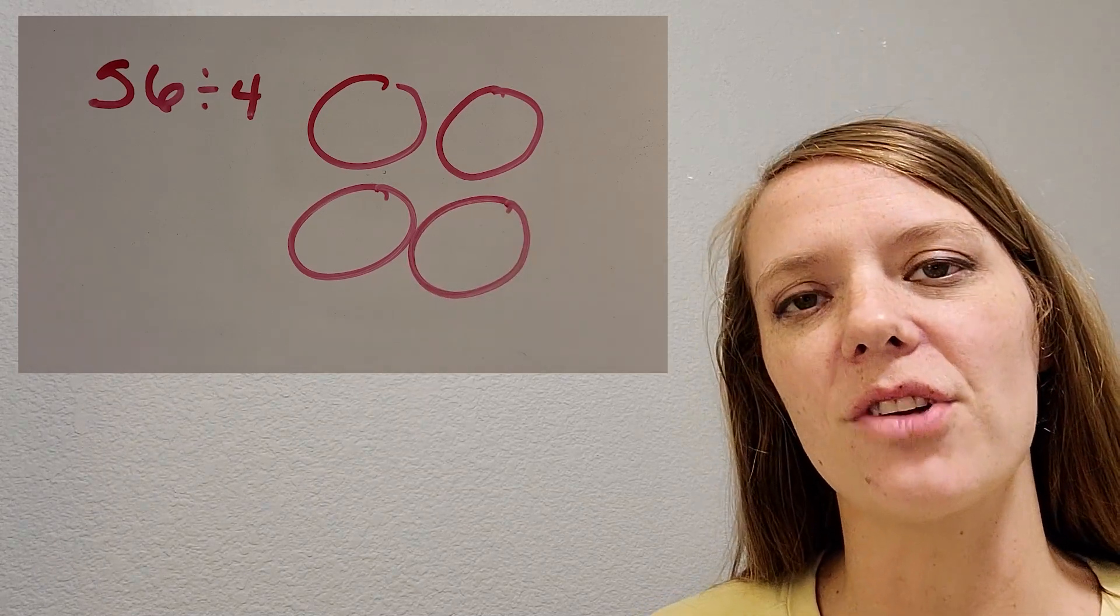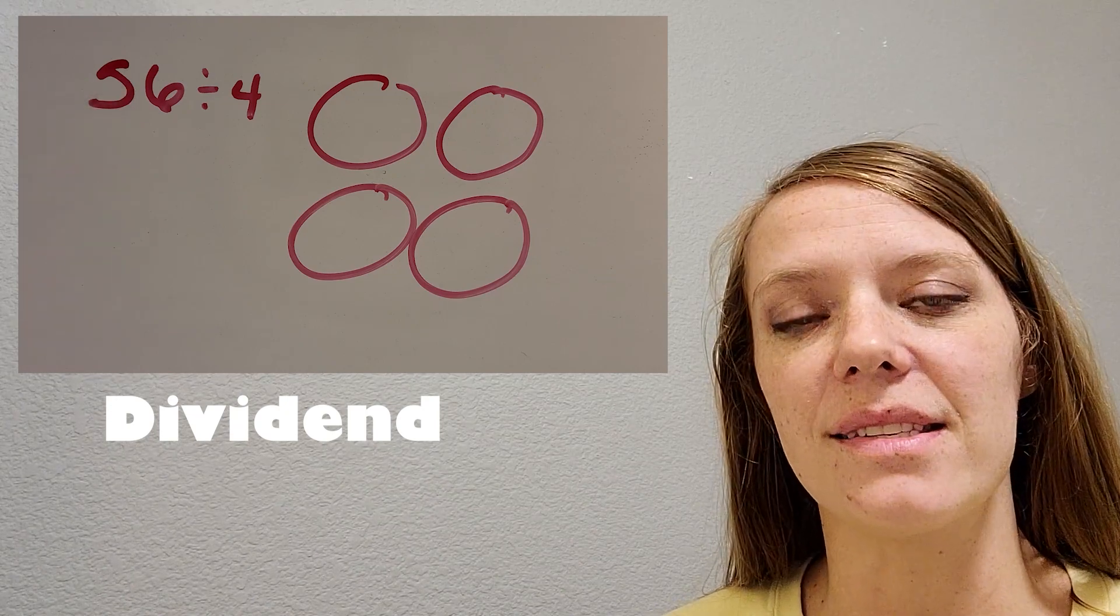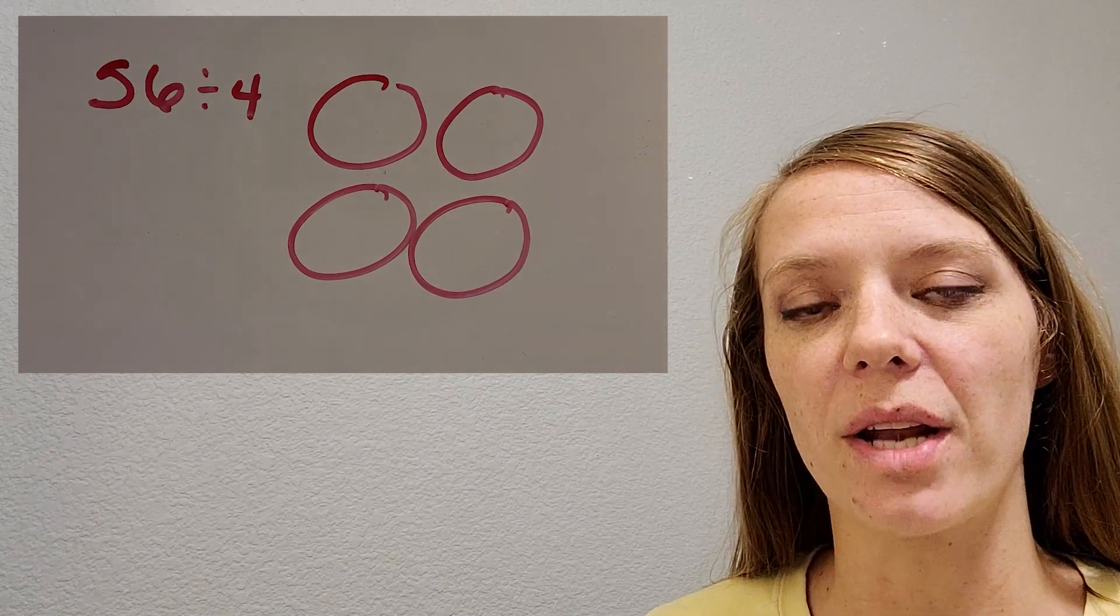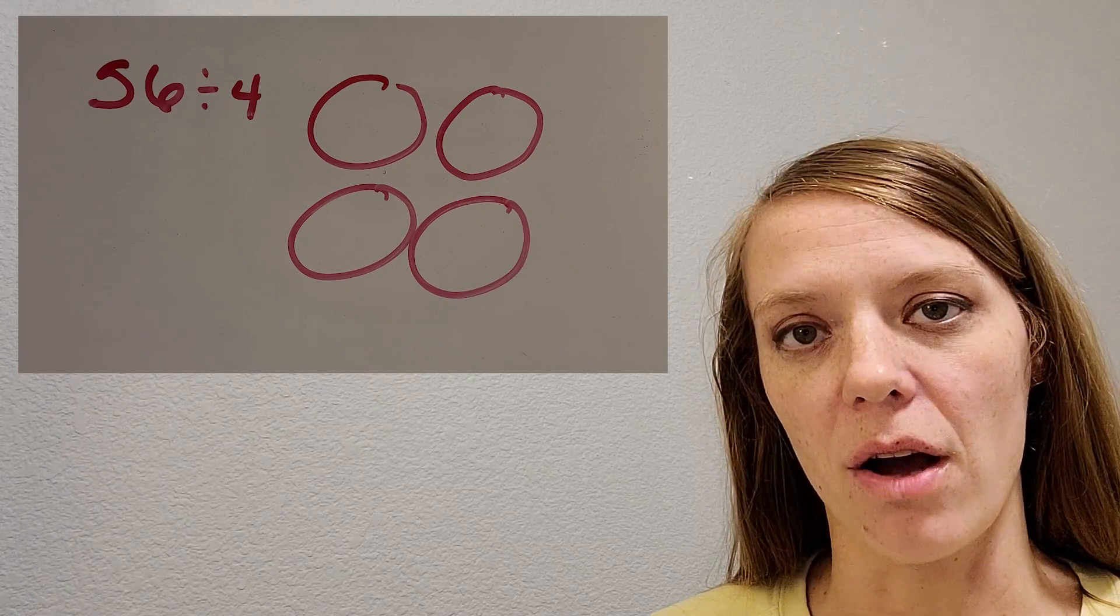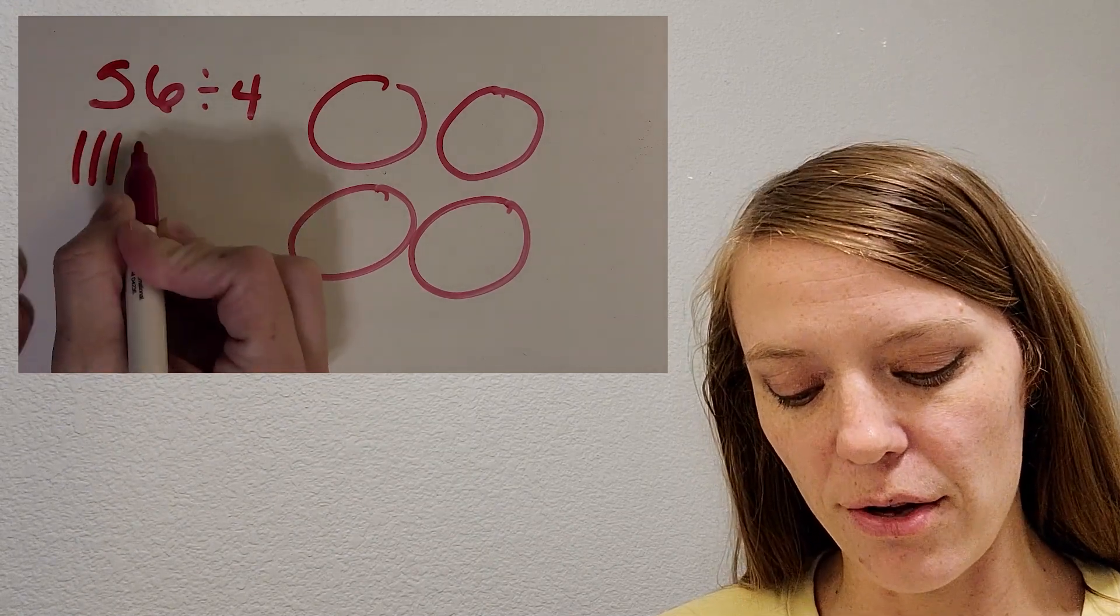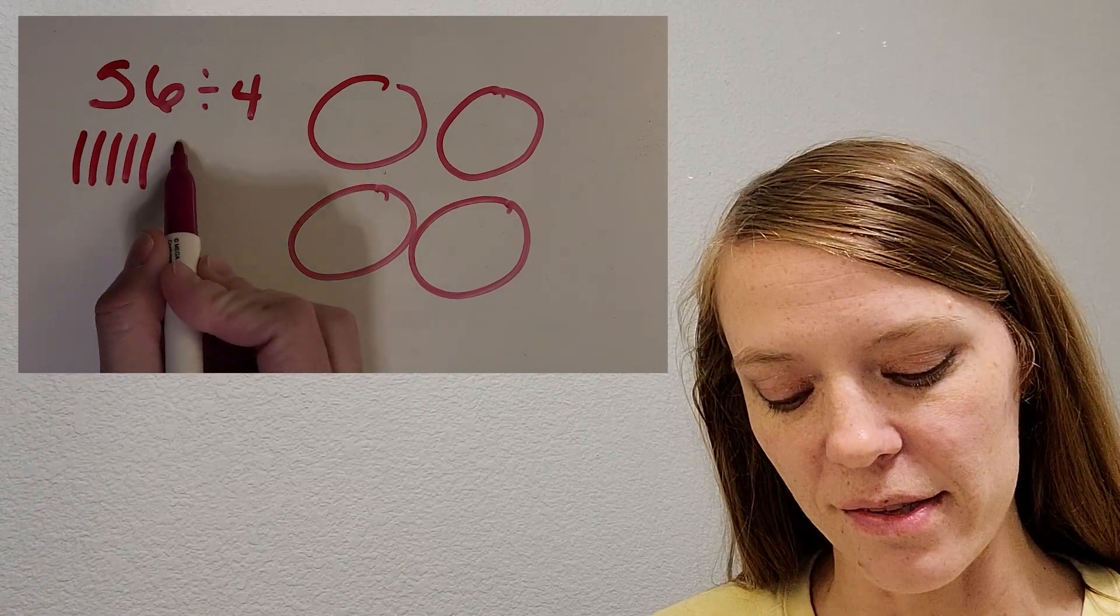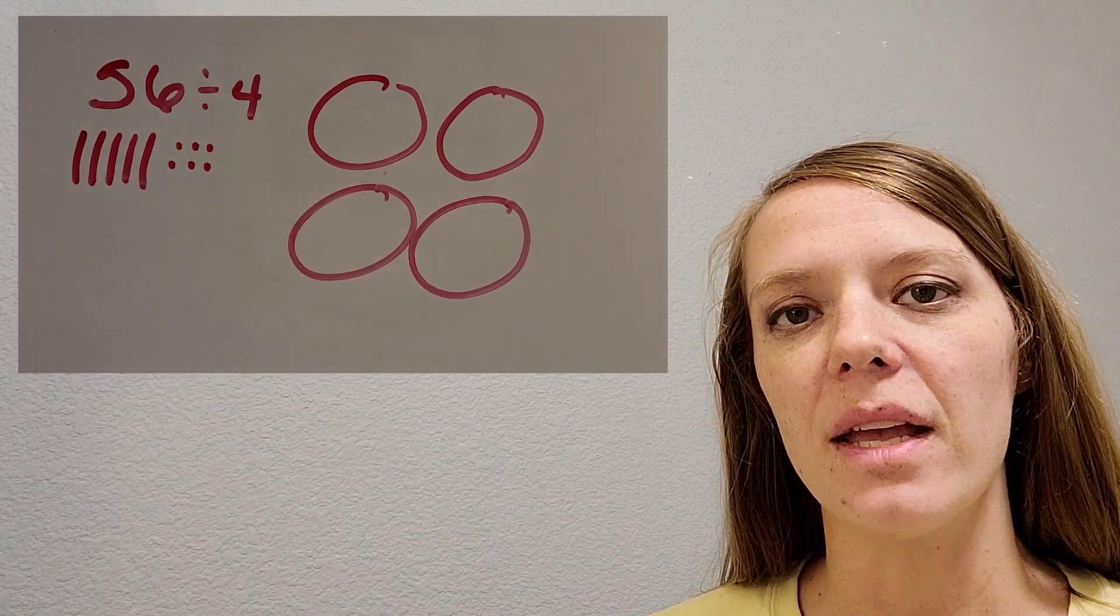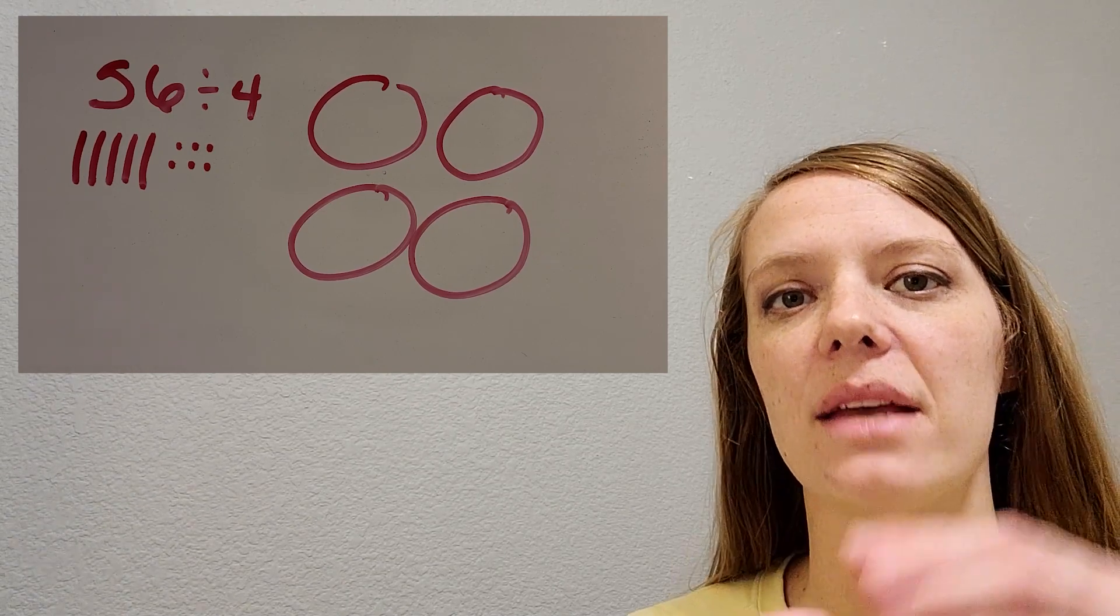Then before I start, I like to think about the dividend or the number that I'm going to divide, which is 56. And I like to think about that as a base 10 block drawing. So I see 56. And I start with longs. I'm going to draw them like this. So 10, 20, 30, 40, 50. Then I have six. I'm going to draw units or ones. One, two, three, four, five, six. And that way, it looks like it's going to be easy to take that amount and start separating them into the groups.